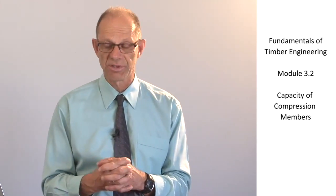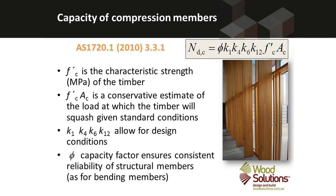The capacity of compression members includes factors phi, k1, k4, and k6, which we've met before for bending members and tension members. There is also a k12 factor, and the k12 factor models buckling just as it did for bending members. However, for compression members, buckling is different to the buckling of bending members, and the k12 value is evaluated slightly differently.